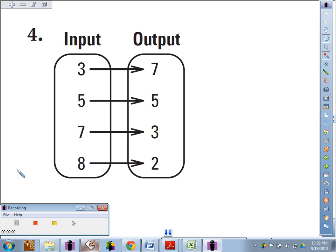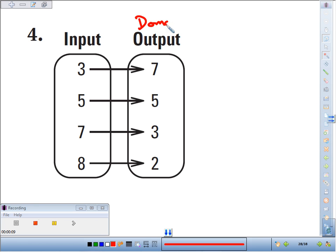Learning Target 161 asks us to identify the domain and range of a function. And if we think back to our vocab words, I like to think of domain, the key two letters are IN, the set of all the inputs. So in this case, the domain will be 3, 5, 7, and 8.